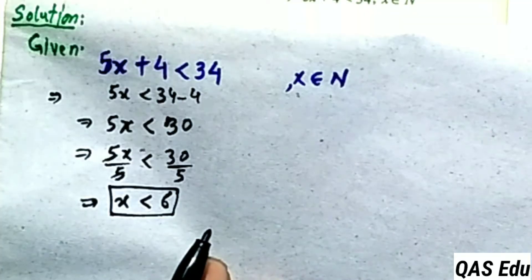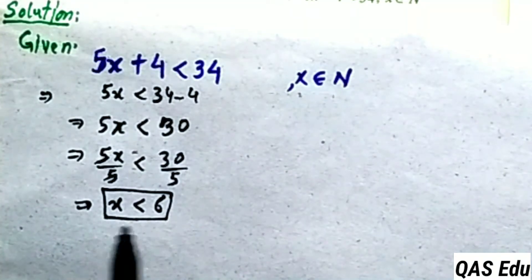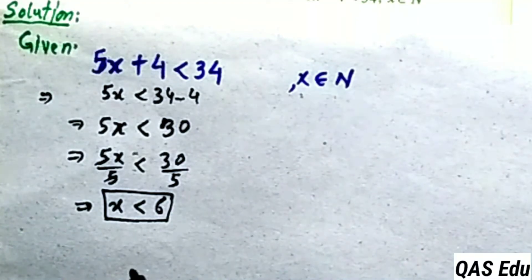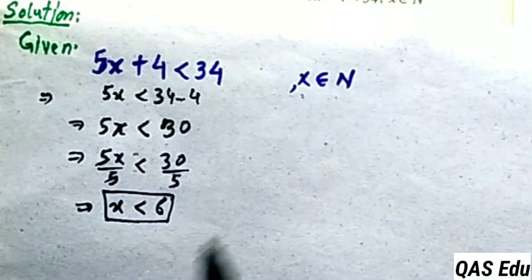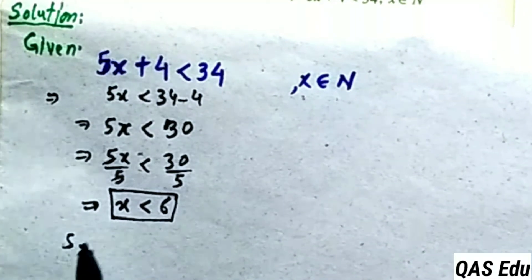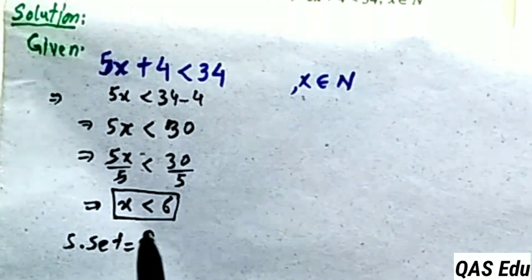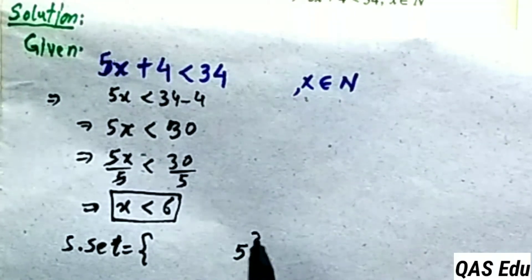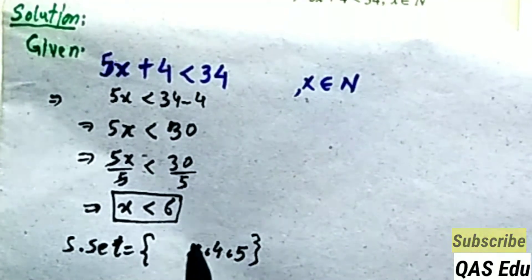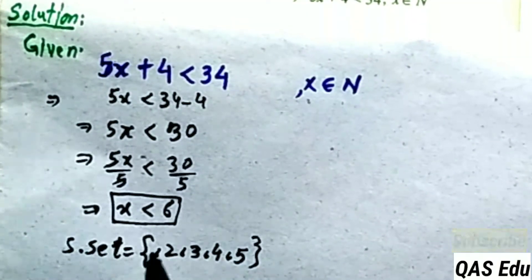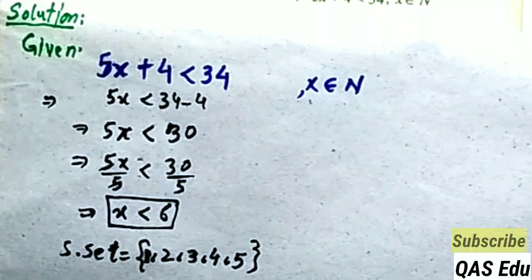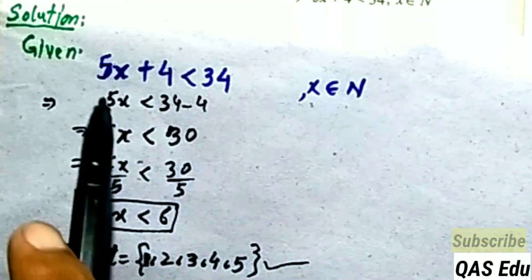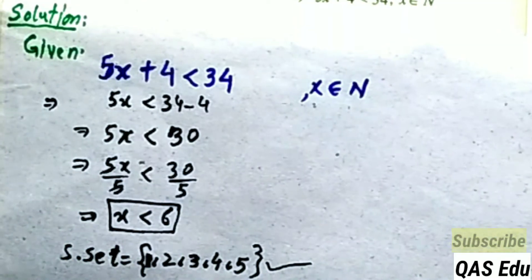So x is less than 6. The natural numbers less than 6 are 5, 4, 3, 2, 1. Since 6 is not included (strict inequality), we start from 5 going down. Zero is not a natural number — it belongs to whole numbers — so the solution set is {1, 2, 3, 4, 5}.